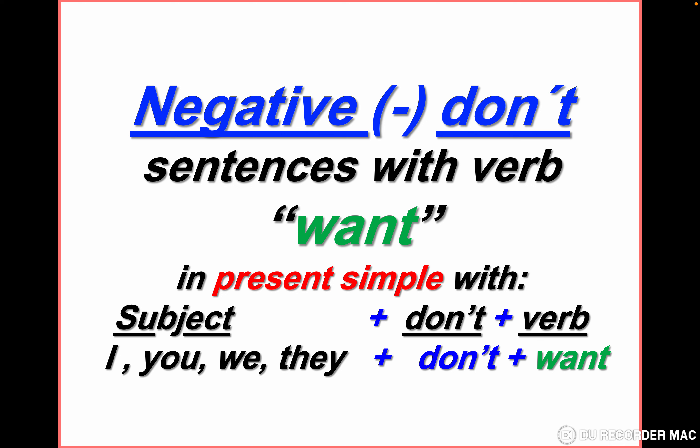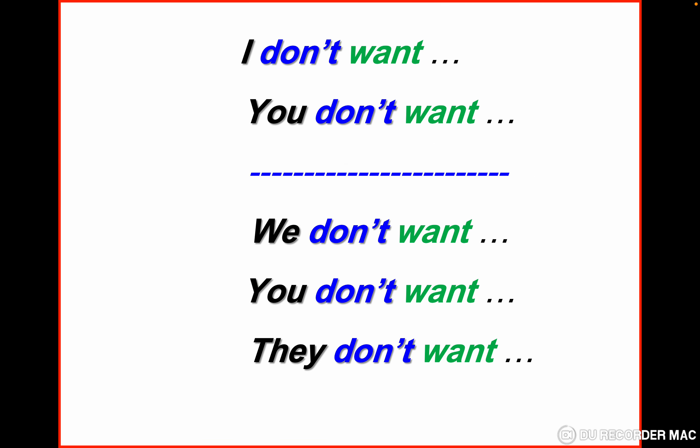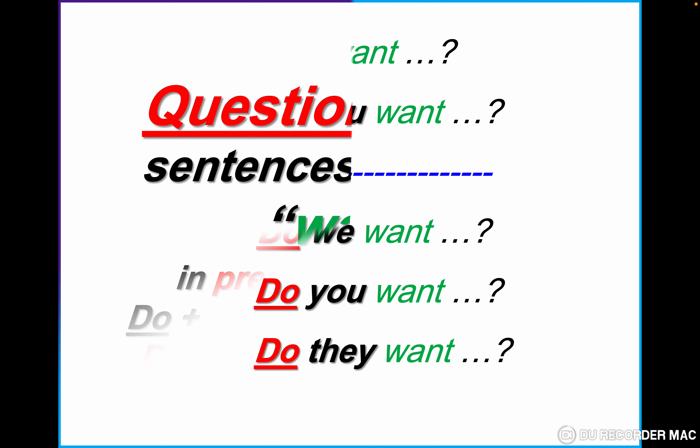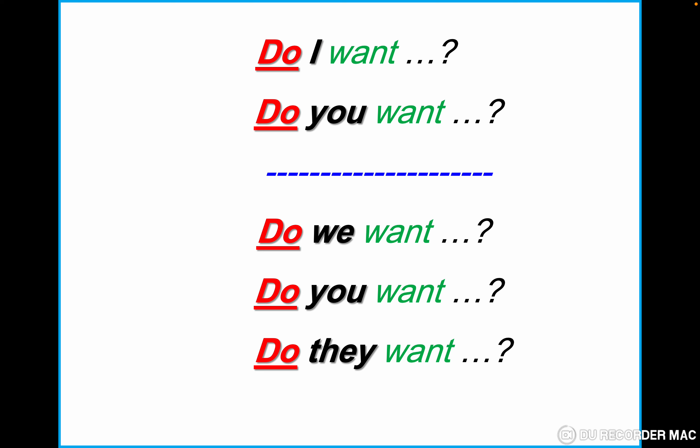Negative form: the rule is subject plus 'don't' plus verb. The subjects are I, you, we, they — plus 'don't' plus 'want': I don't want, you don't want, we don't want, they don't want. Question form: the rule is 'do' plus subject plus verb. So: do I want, do you want, do we want, do they want.